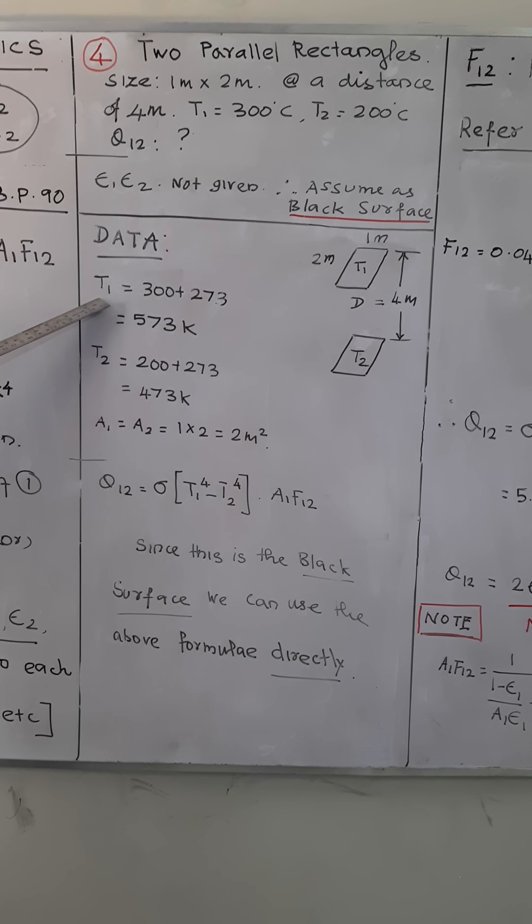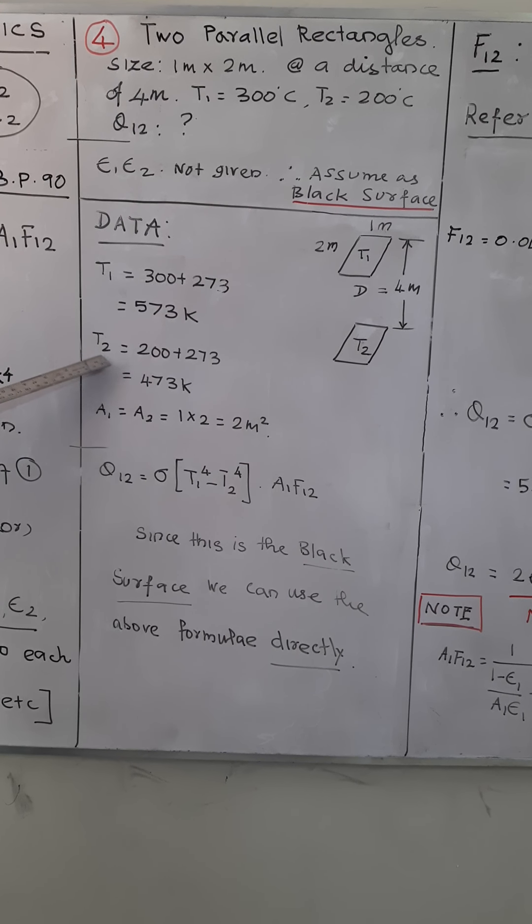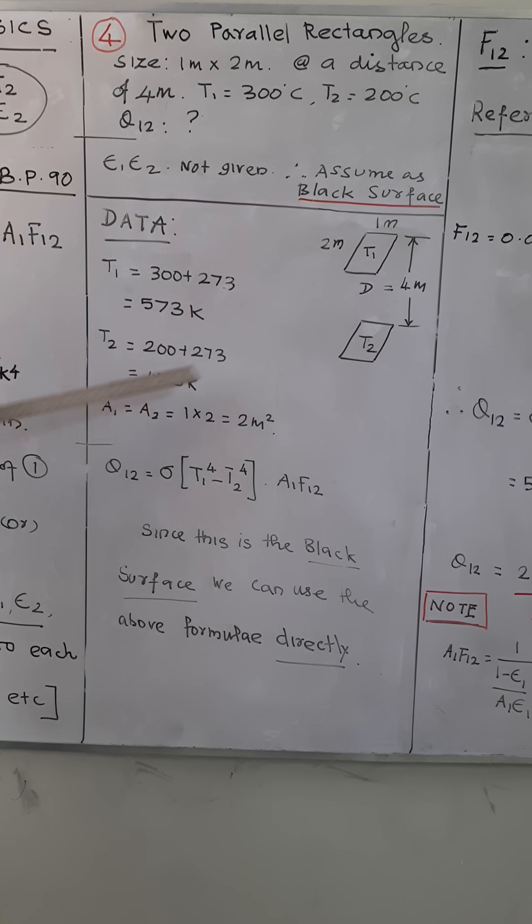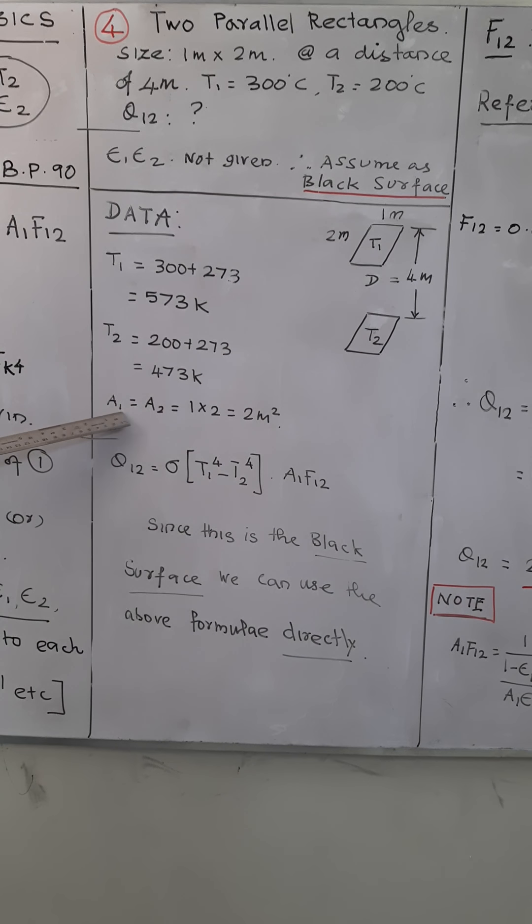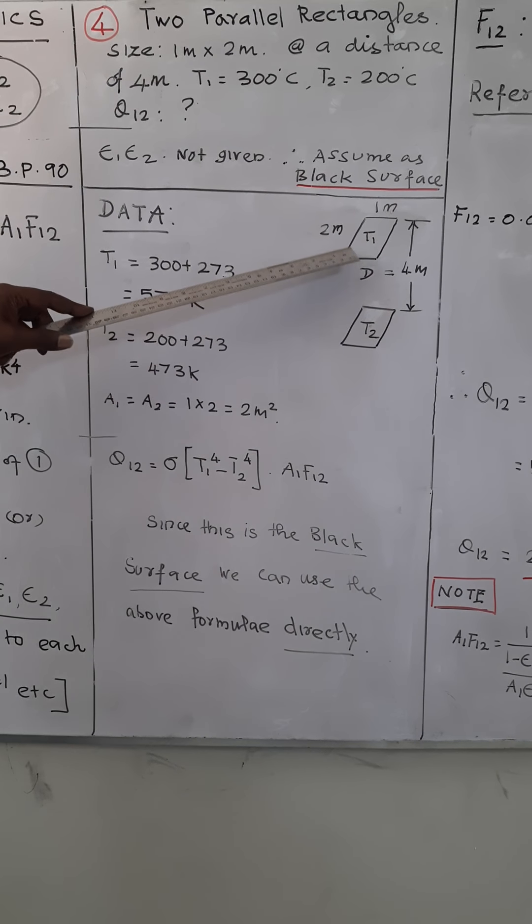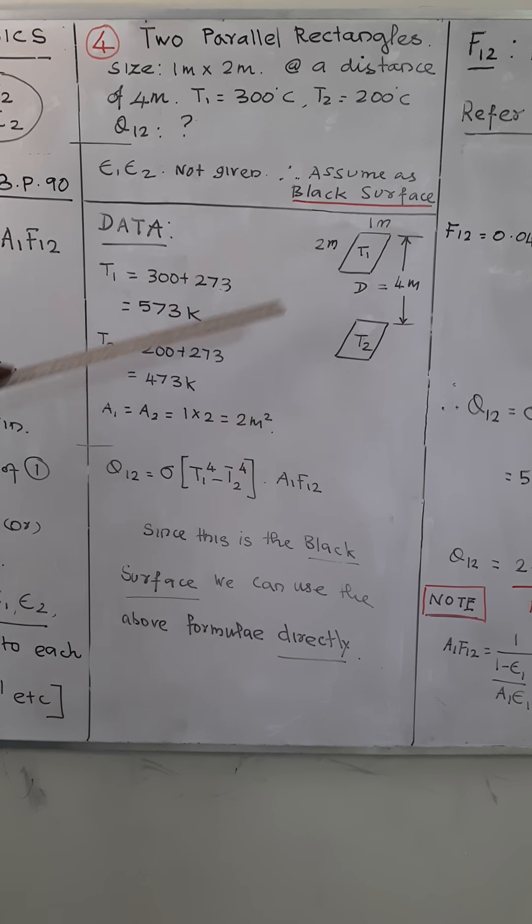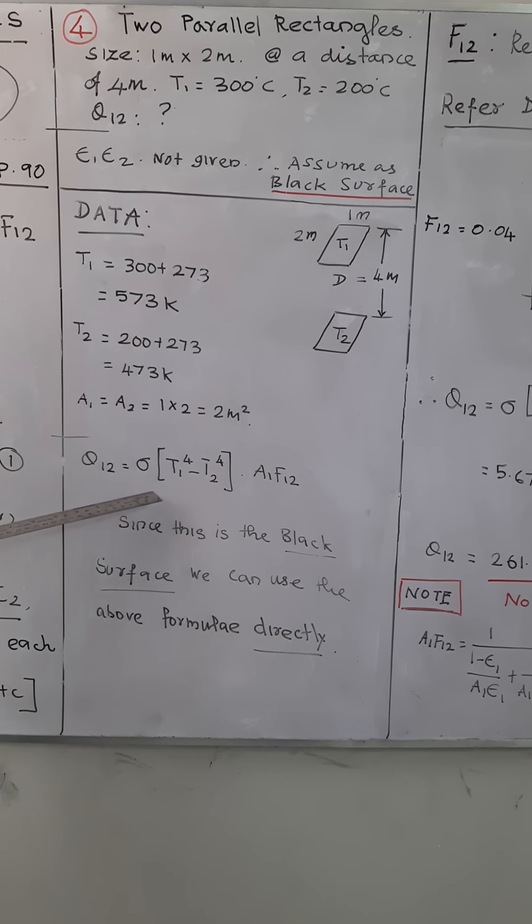The temperature T₁ is 573 Kelvin, T₂ is 473 Kelvin, and area - since they are equal rectangles, the surface area will be 1 meter by 2 meter, so you'll get 2 meter square. So all the data are available except the shape factor.